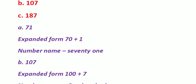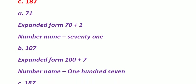Now, seeing the expanded form, write the number name. See 100 — so one hundred. There are no tens. Then 7 — one hundred seven. Is it clear?